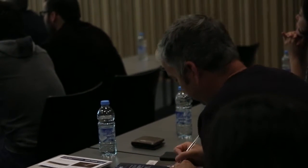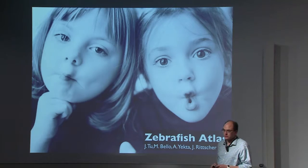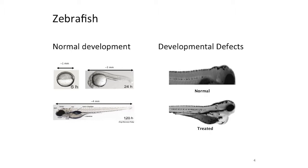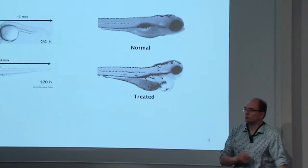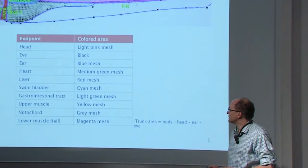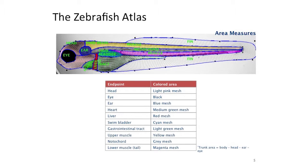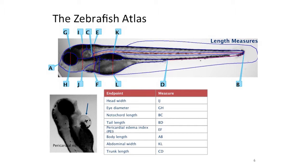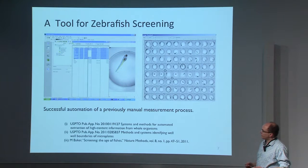The so-called zebrafish is a transparent model organism that transforms depending on certain toxicological states. As you can imagine, if you want to screen thousands of compounds you have to worry about automation and automated data analysis. Basically fueled by developments in analyzing faces and facial expressions, we developed an atlas for zebrafish.